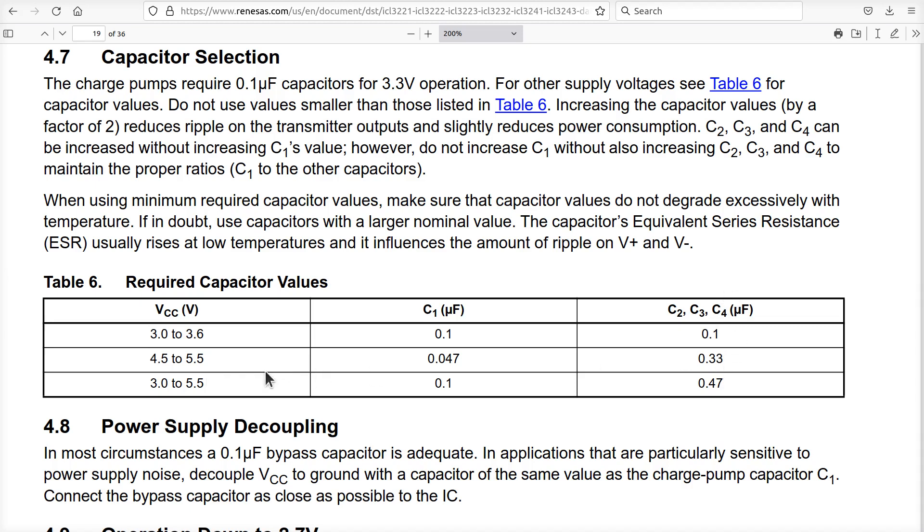If you're going to be in this range, use a 0.047 on C1 and a 0.33 over there. Or if you're going to want to run the chip between 3.0 and 5.5, you want a 0.1 here and a 0.47 here. So bigger size capacitor for these three and the 0.1 should be okay over here.